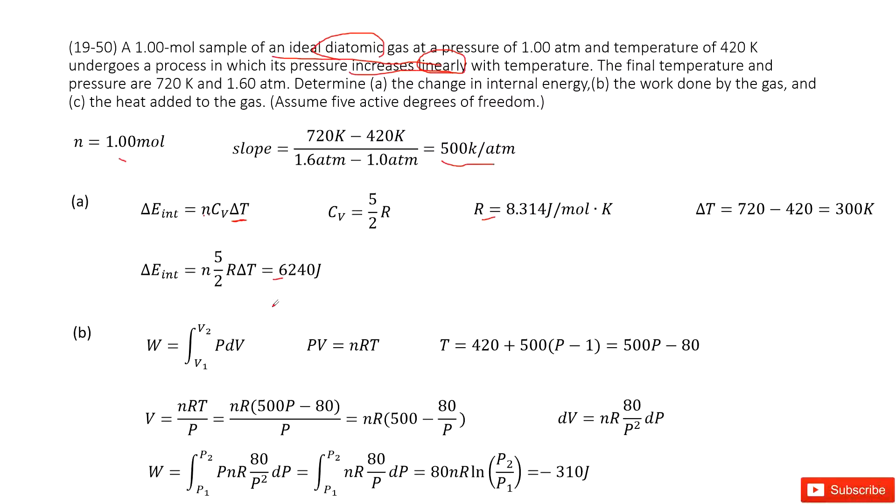The next one, we need to find the work done by the gas. So the work done by the gas is usually we consider is P times ΔV, right? But there, obviously this P changes with V. So we do the integral from V1 to V2. Now we need to find the relationship between P and V and then replace the V or P. This is how we do this integral.